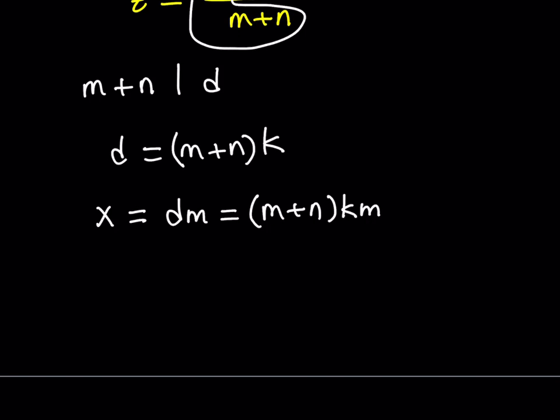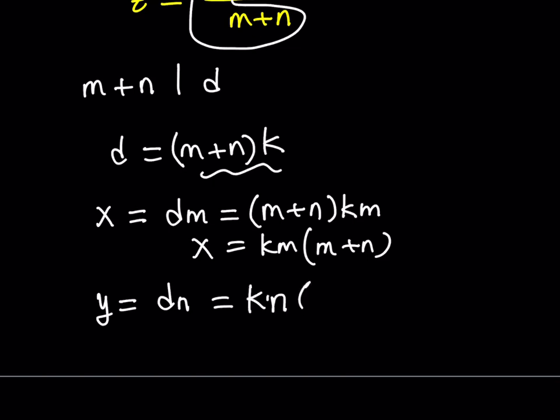Which is m plus n times km, or if you want, you can write it as km times m plus n. So this is x. And we can do pretty much the same thing for y. y is equal to dn and d equals this. So we can write it as kn multiplied by m plus n.